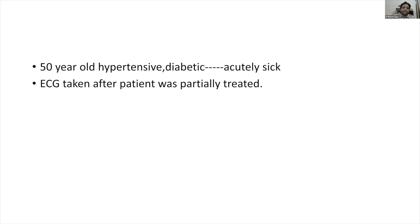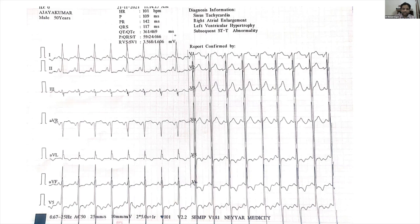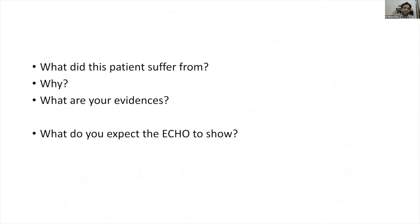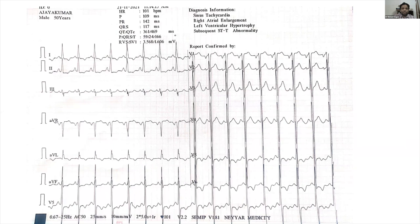Case number one: a 50-year-old hypertensive diabetic, acutely sick. The ECG was taken after the patient was partially treated. I'm not telling you how the patient came or anything else. The questions are: What did this patient suffer from? Why? What are the evidences? And what do you expect the echo to show? All these ECGs are from my clinical practice, with some sent in by participants.